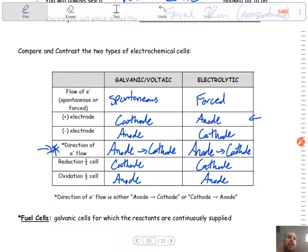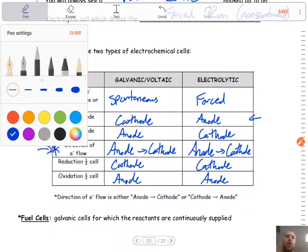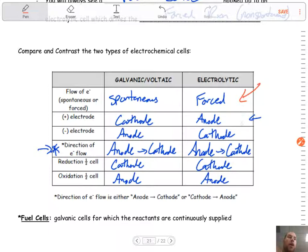So the only thing that changes is that, hey, electrolytic is forced, which then makes these flip from where they were in a voltaic cell. That's where it kind of gets confusing is because now it's a forced reaction. It's the non-spontaneous.